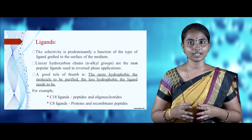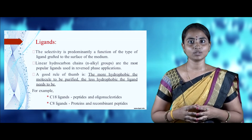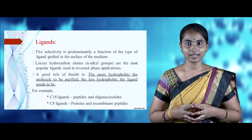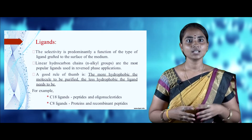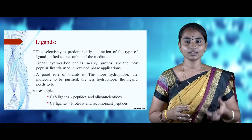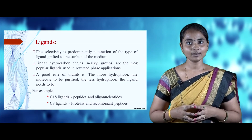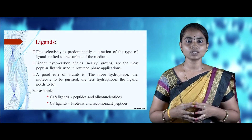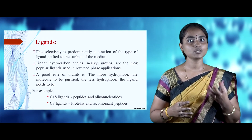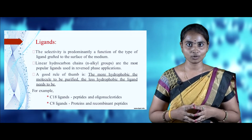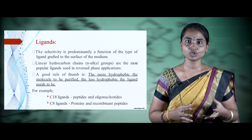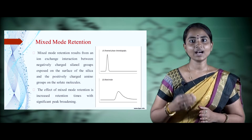The most important component in reverse phase chromatography is ligands. The ligand should be highly specific and selective because it plays a complementary role, interacting with the molecule to be purified or separated. Ligand selectivity is predominantly based on the type of ligand grafted to the surface of the medium. Linear hydrophobic chains like n-alkyl groups are most commonly used. A thumb rule: when isolating a highly hydrophobic molecule, use a less hydrophobic ligand. For peptides and oligonucleotides, choose C18 ligands; for proteins and recombinant peptides, choose C8 ligands.